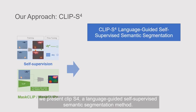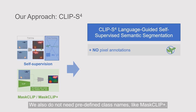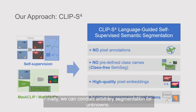We present CLIP-S4, a language-guided self-supervised semantic segmentation method. Our method does not need pixel annotations during training or fine-tuning. We also do not need predefined class names, like MaskCLIP+. Finally, we can conduct arbitrary segmentation for unknown classes.